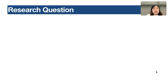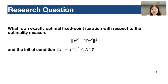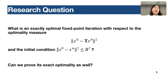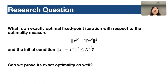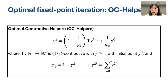The research questions I want to answer are: first, what is the exactly optimal fixed point iteration with respect to our optimality measure and initial conditions, under the stated assumptions on the operator? And second, how can we prove that it is actually exactly optimal? These are our main goals.